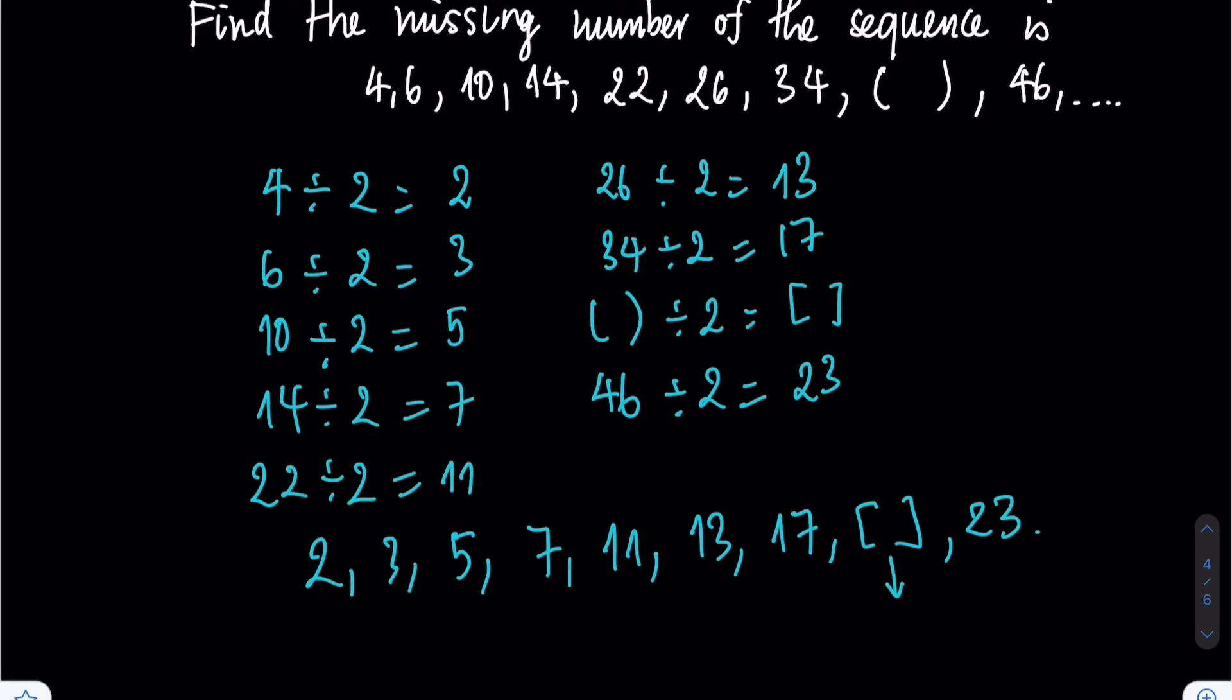Since the missing square is 19, therefore, the missing bracket is 2 times 19, which equals 38. This is the answer of the question.